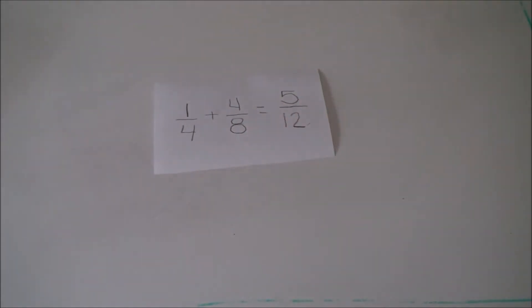Take a look here. Here, a fifth grader incorrectly solved 1/4 plus 4/8 stating the sum is 5/12. A common error is for students to add both the numerators and the denominators.